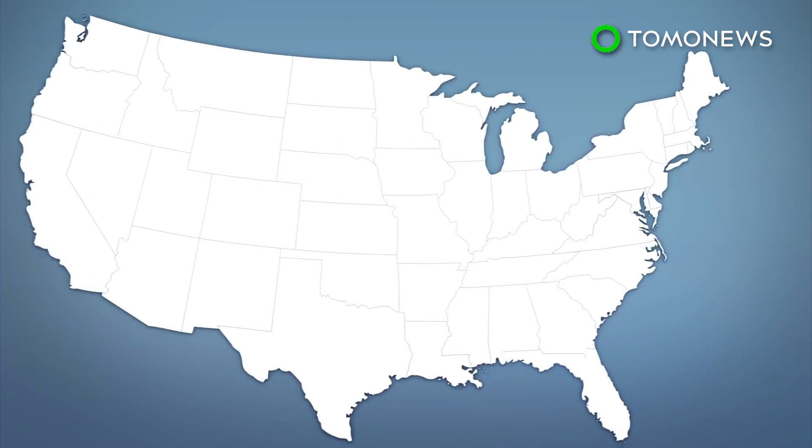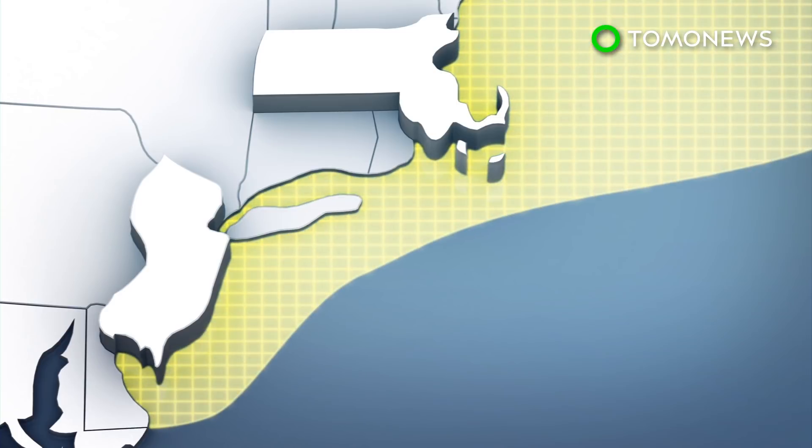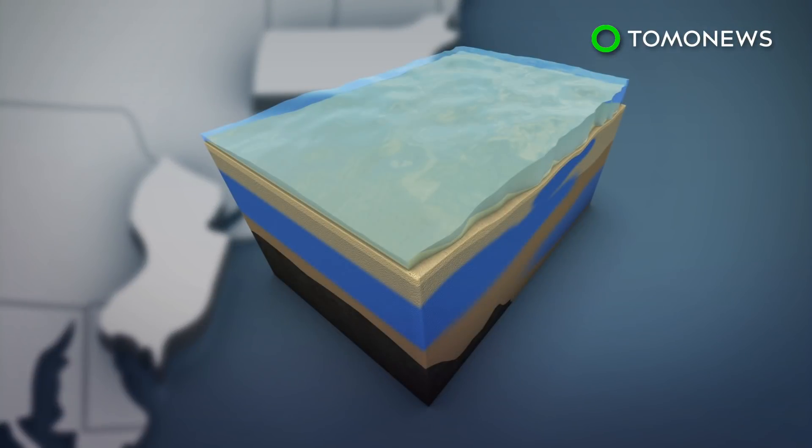The results reveal a reservoir of freshwater stretching from the coast of New Jersey to Massachusetts, extending out about 50 miles to the edge of the continental shelf. The reservoir begins some 600 feet below the ocean floor and bottoms out at 1,200 feet.